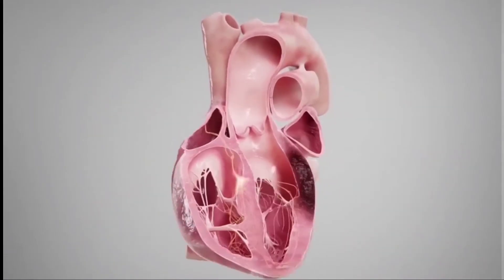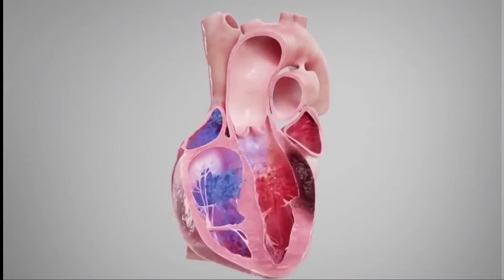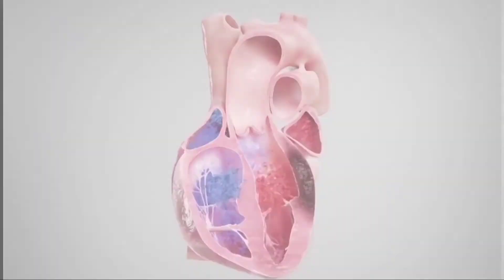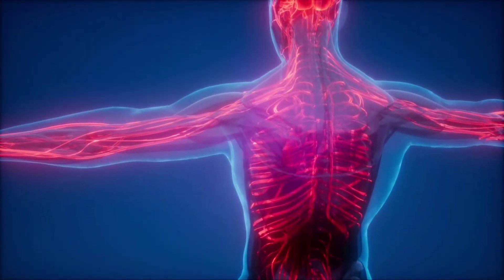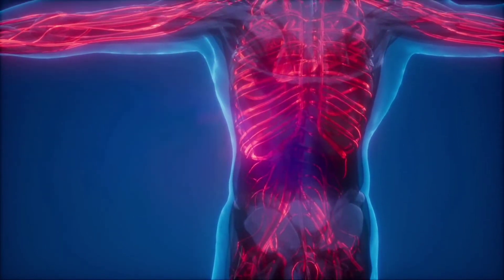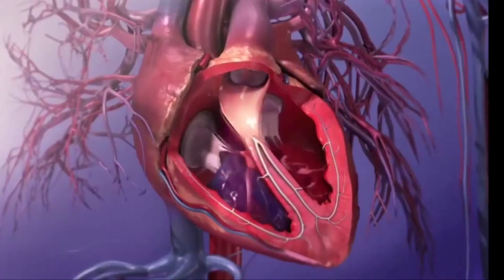On average, a healthy heart beats 115,000 times per day. When excited, the heart rate can double. The heart pumps 2,000 gallons of blood through your entire body 24 hours a day and never rests.